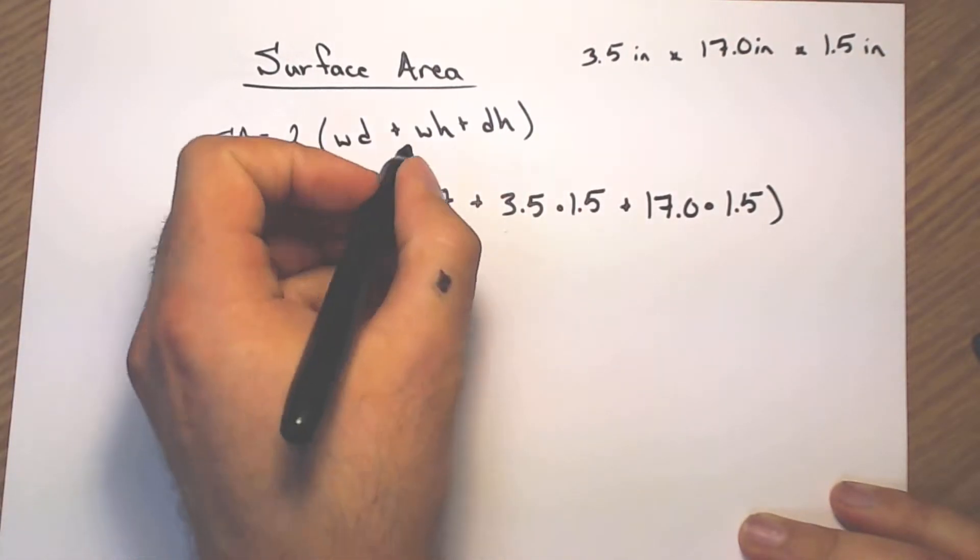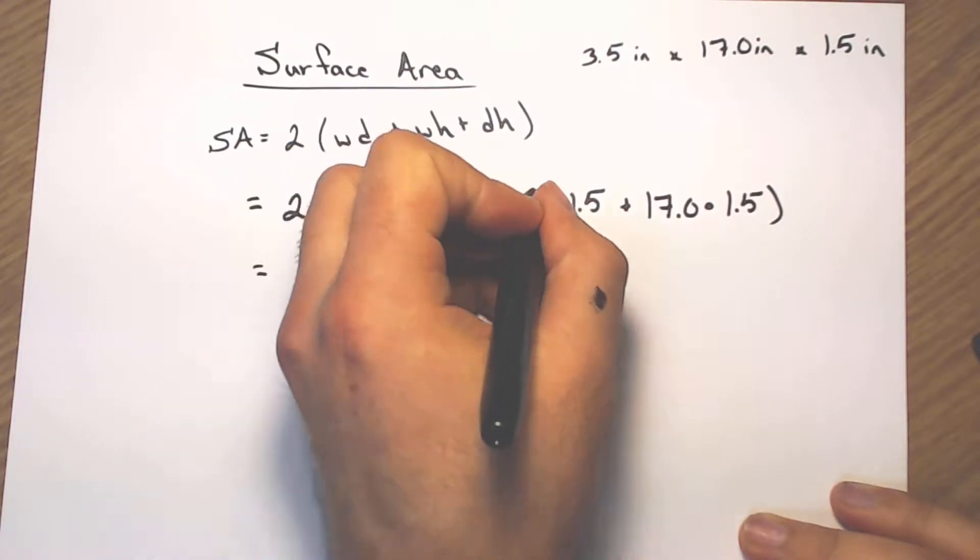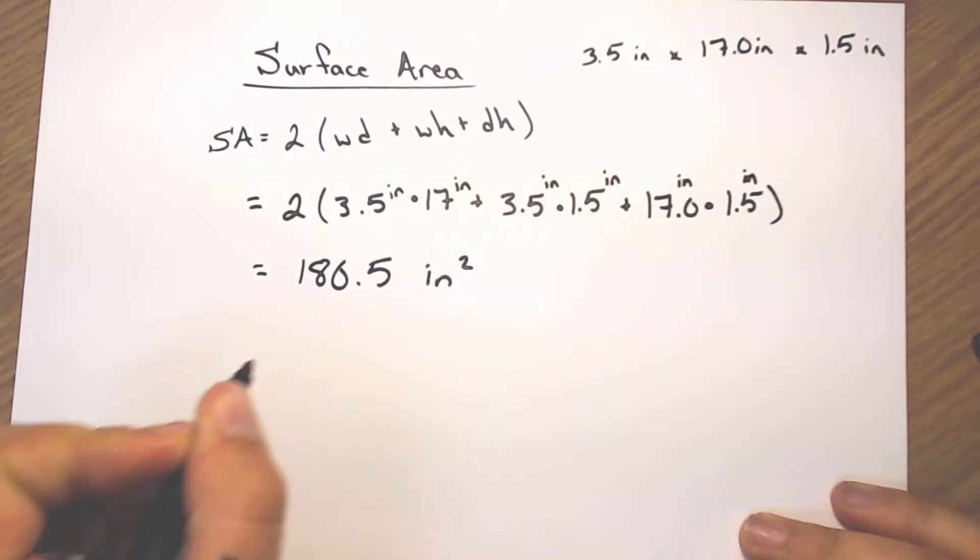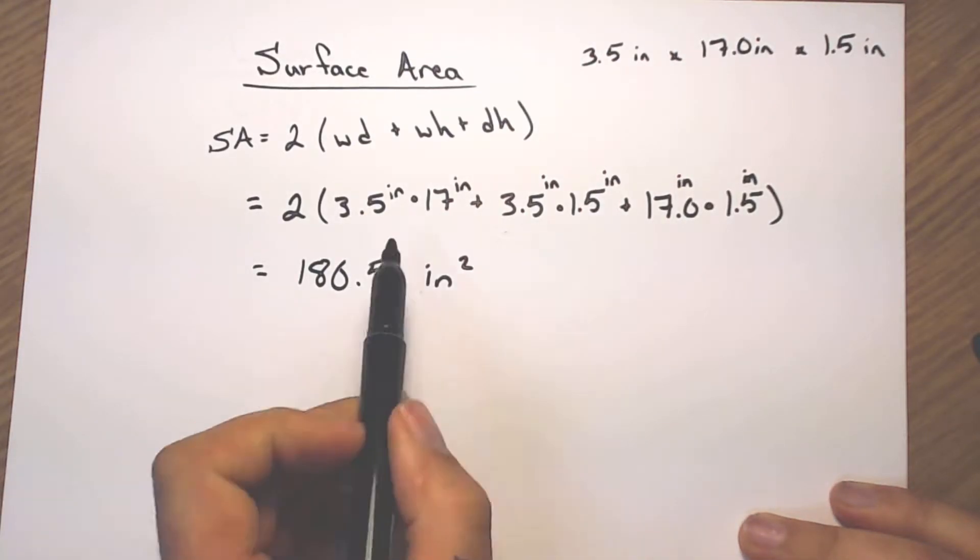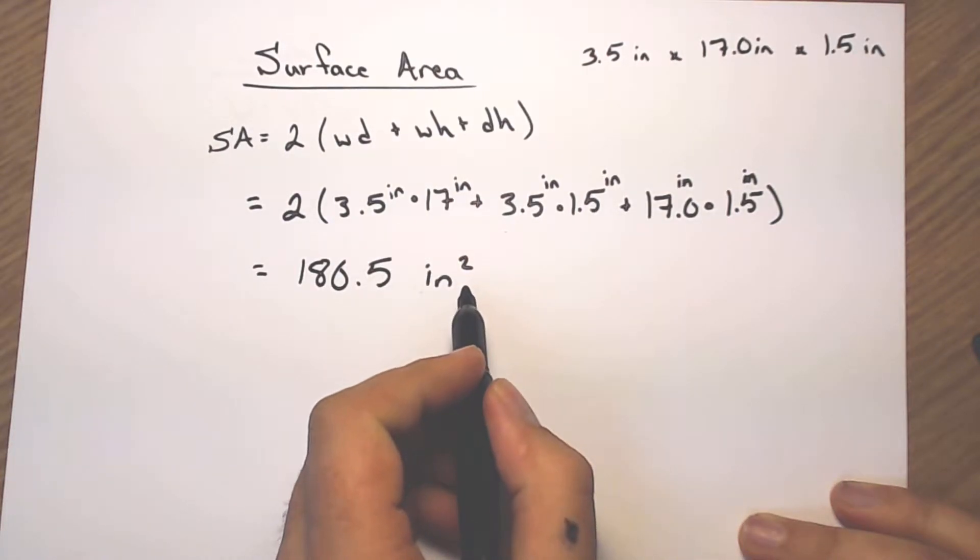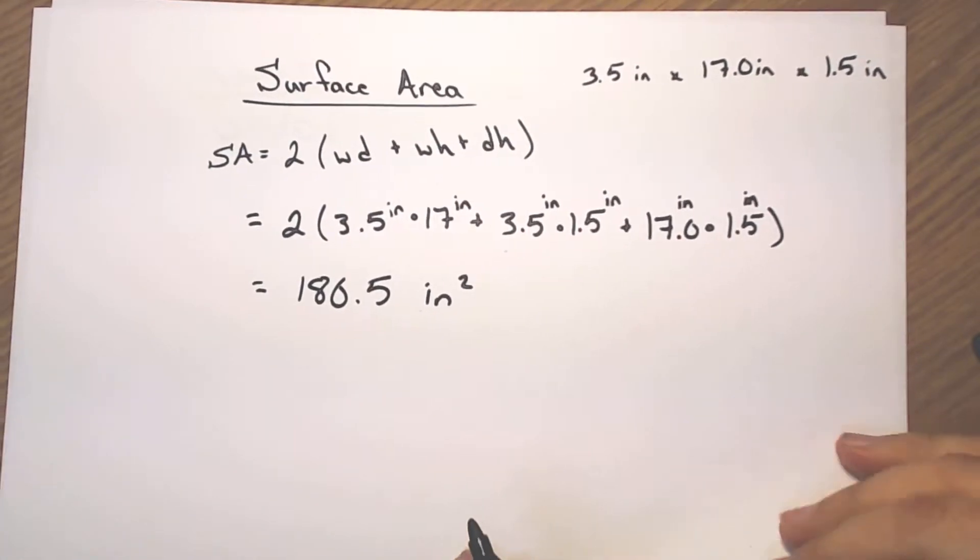Inches squared comes from this being an inch times an inch. Same thing all the way down. Inches times inches will give me inches squared. And if I'm adding up two things that are inches squared, I still end up with inches squared. So surface area is now done.